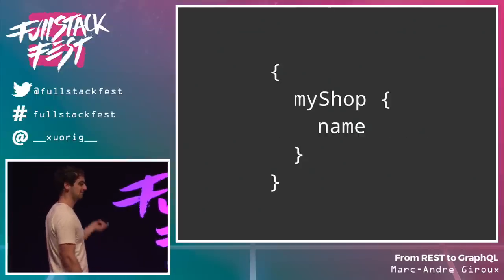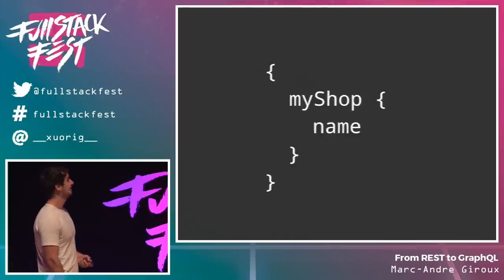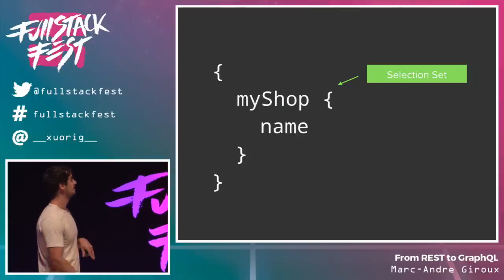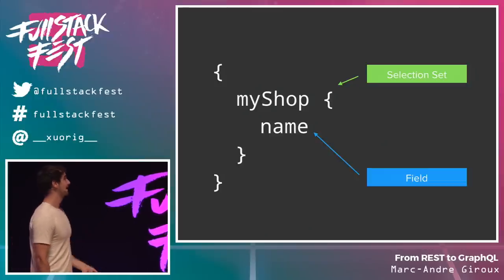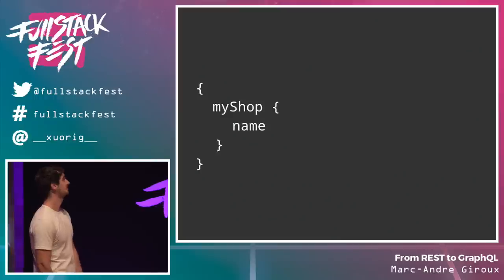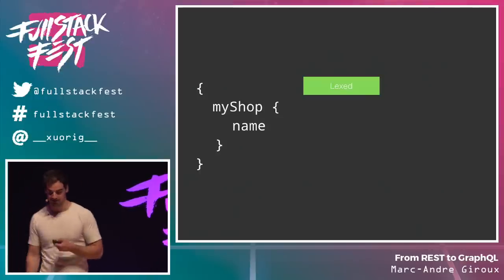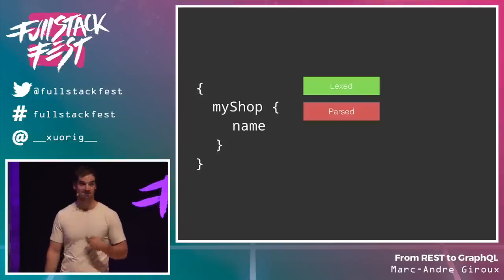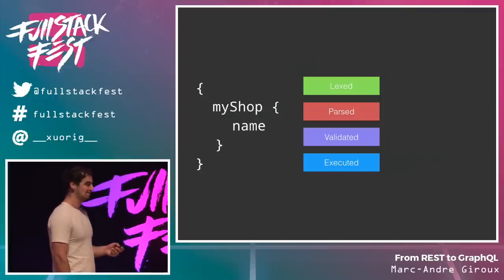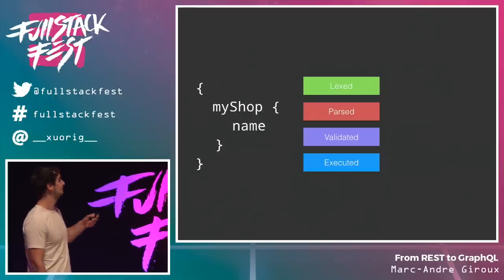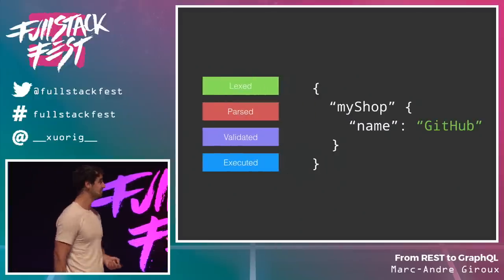This is a really simple GraphQL query — kind of the hello world of GraphQL. The brackets are selection sets that tell GraphQL what you want to select on that object, and you have fields inside these selection sets. When you send that query to a GraphQL server, it's like any other language: it's lexed, parsed, validated, executed, and you get a nice response. The response format follows the exact pattern that you request — it's just JSON with the same shape as your request.